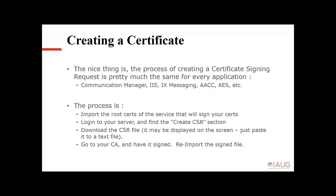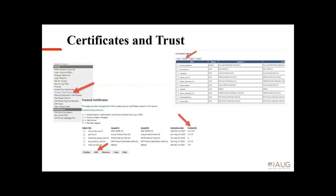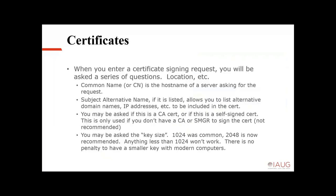Then you go to your certificate authority and have them sign it, then re-import that signed file. In Communication Manager, if you log into the web page on the left-hand side under Security, you'll see Trusted Certificates. That's where you import the certificate from your authority. The same thing exists in AES — you import your trusted certificates. There's also a Certificate Signing Request option; when you click on that, it gives you a form to fill out and sign that request.